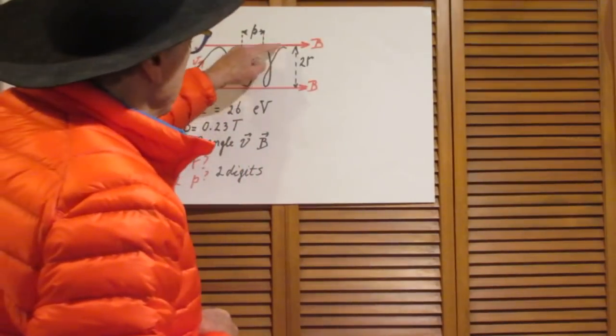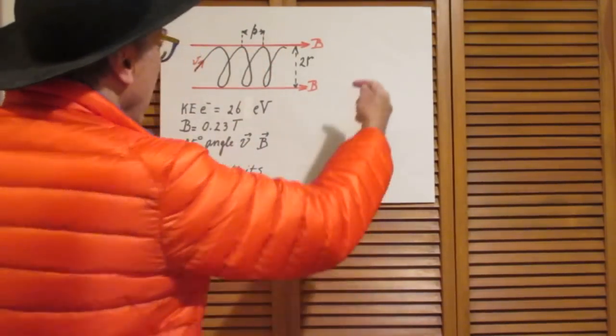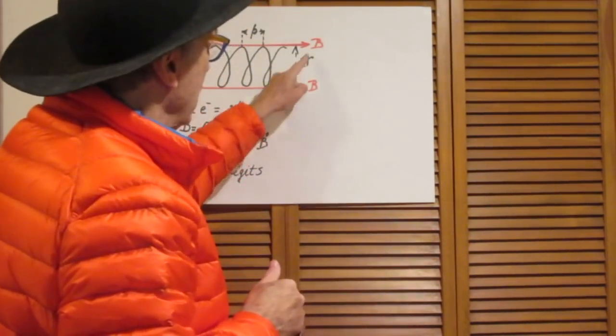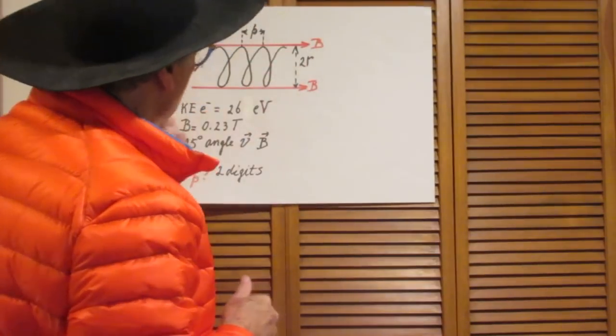Two questions. Both simple, but nevertheless, it would be good for you to go through this again. What is the radius? So if you look in this direction, you will see a circle. What is the radius? So I call this twice the radius.